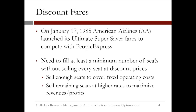In their attempt to sell more seats, airlines started to offer deep discounts. For example, on January 17, 1985, American Airlines launched its ultimate super saver fares to compete with People Express. The key strategy involved selling enough seats to cover fixed operating costs, while selling remaining seats at higher rates to maximize revenues. This led to the science of revenue management that we'll study in this lecture.